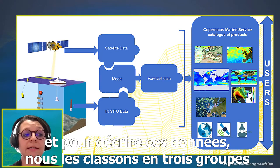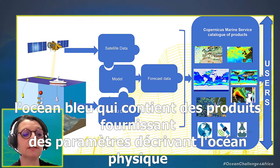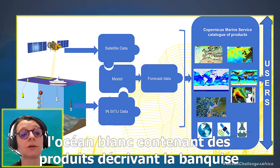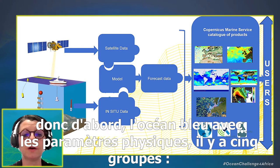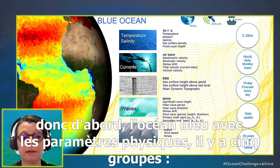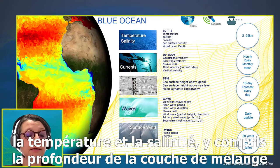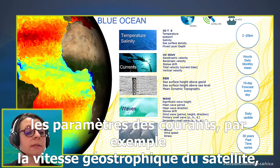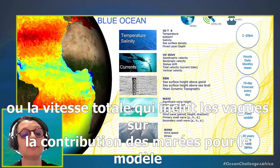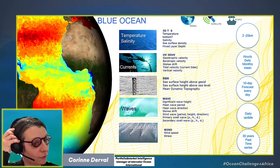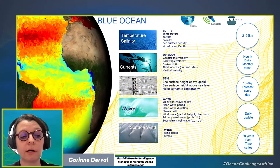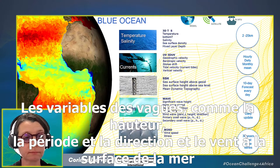Data is classified into three groups: the blue ocean contains products describing the physical ocean; the white ocean contains parameters describing sea ice; and the green ocean covers biogeochemistry parameters. The blue ocean physical parameters include five groups: temperature and salinity including mixed layer depth; currents including satellite geostrophic and total velocity; sea surface height; wave variables including significant wave height, period, and direction; and sea surface wind.